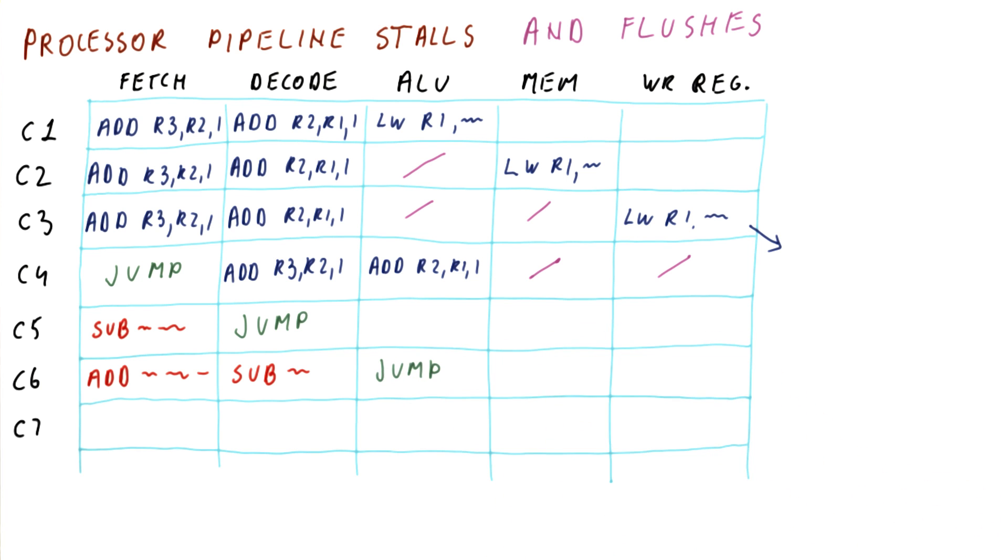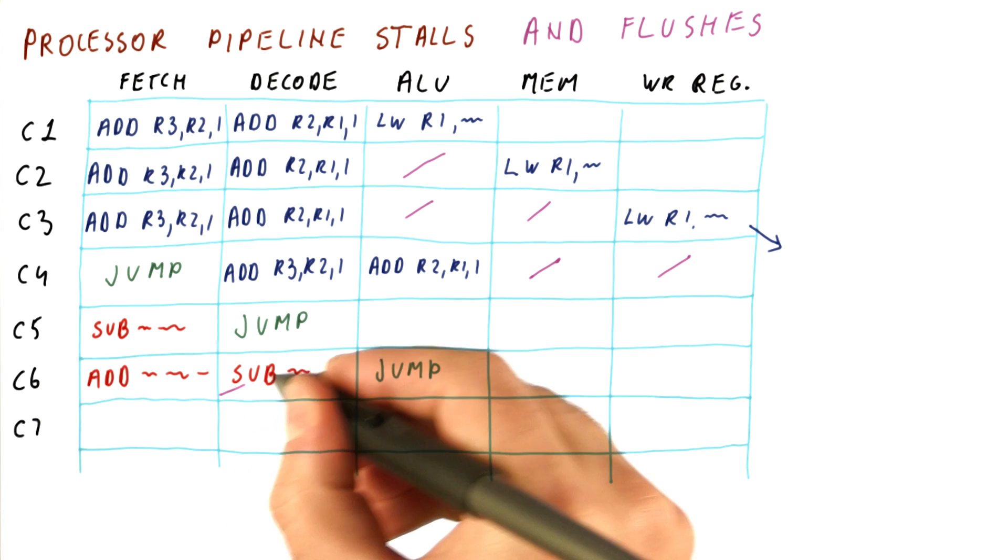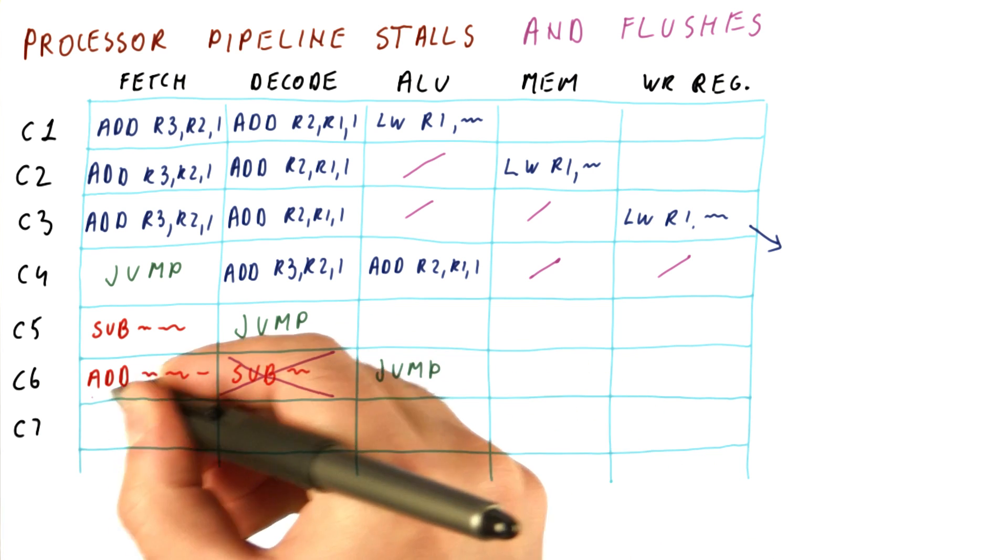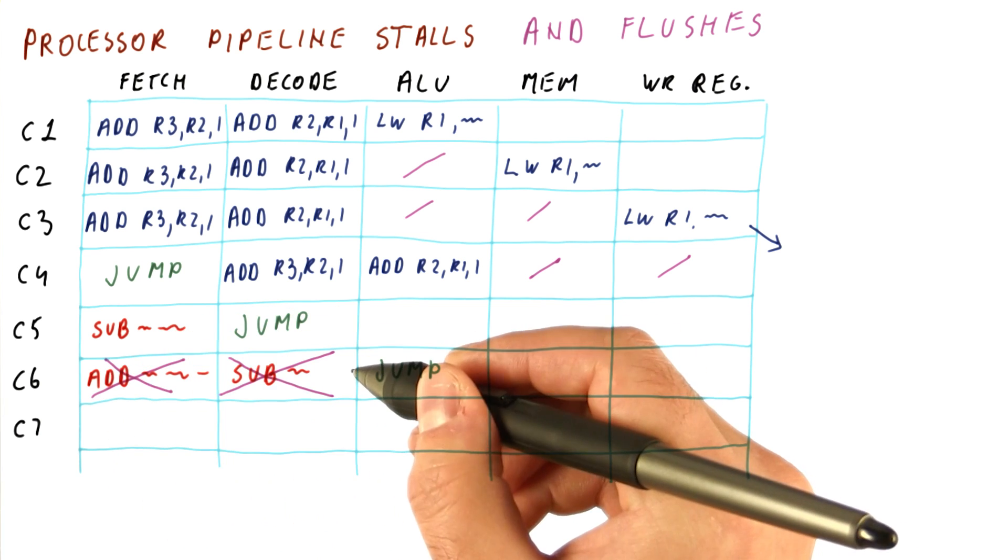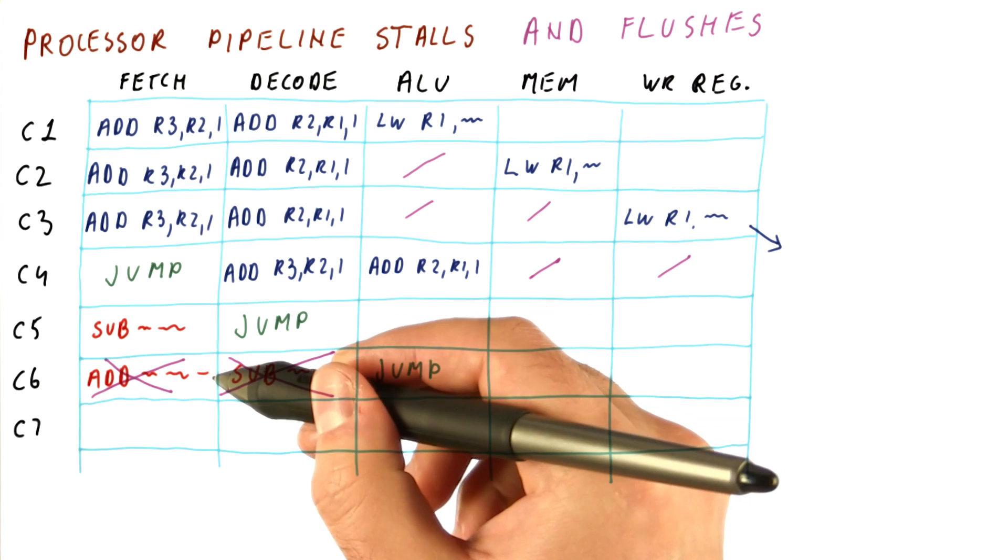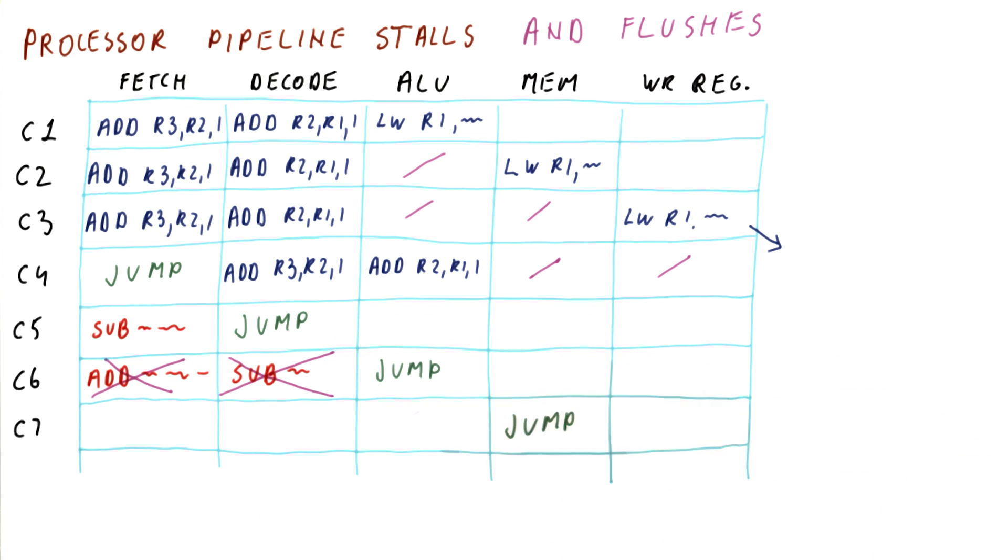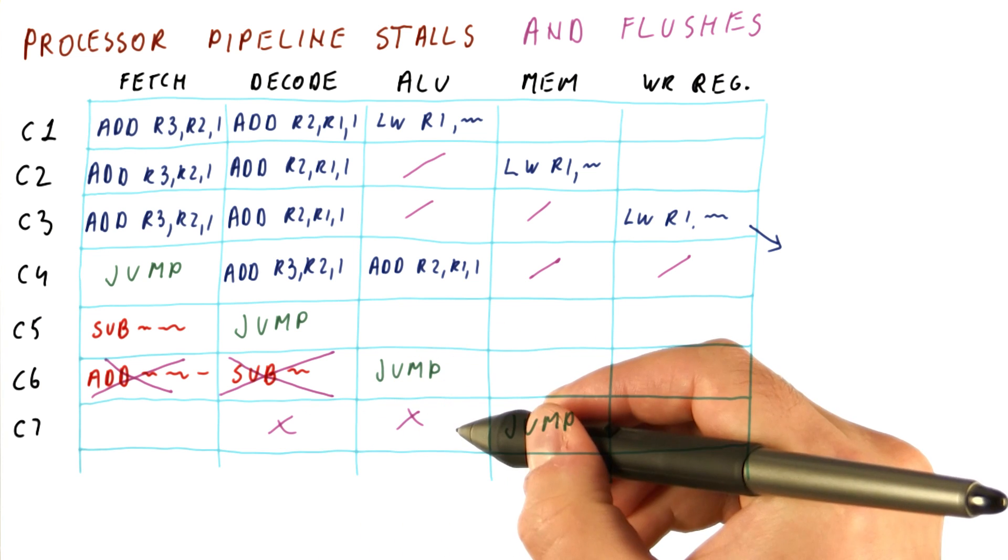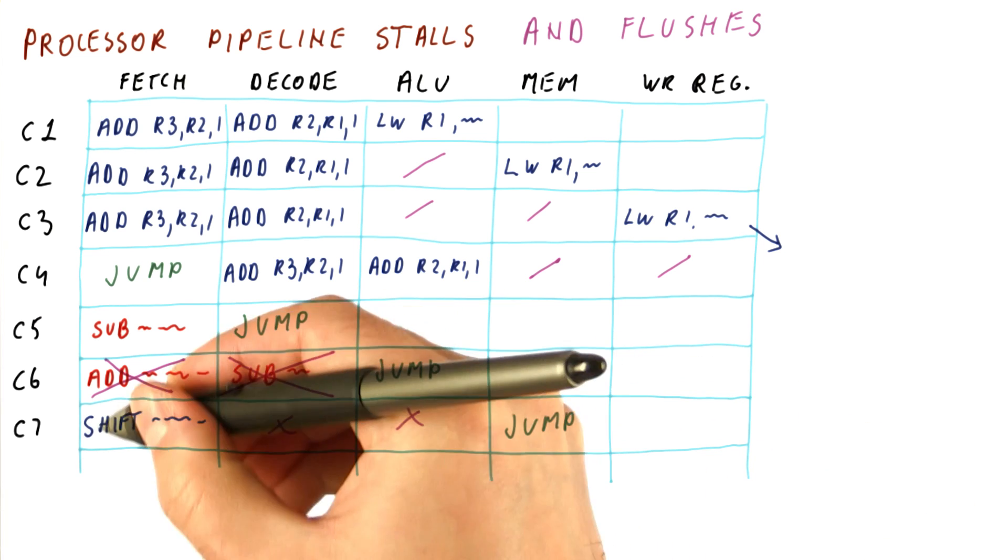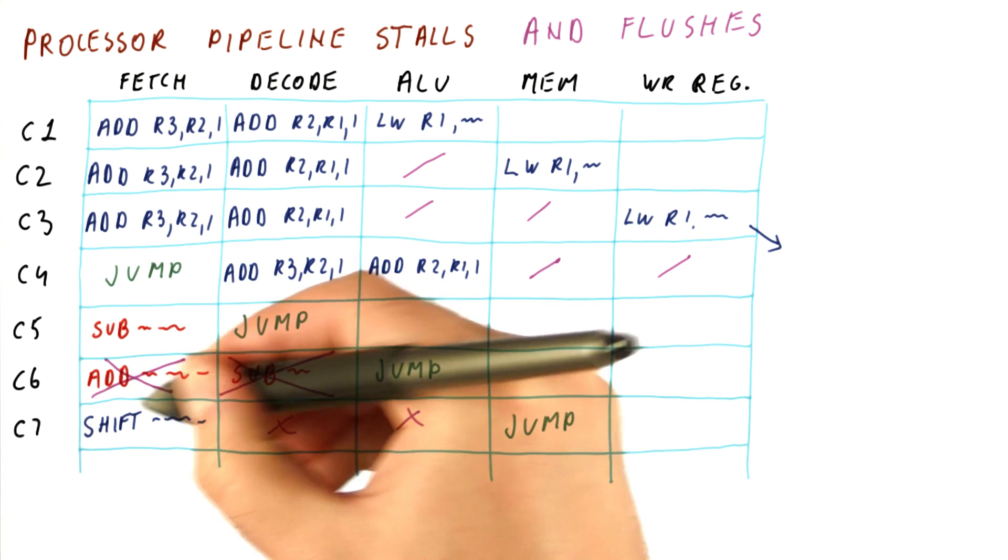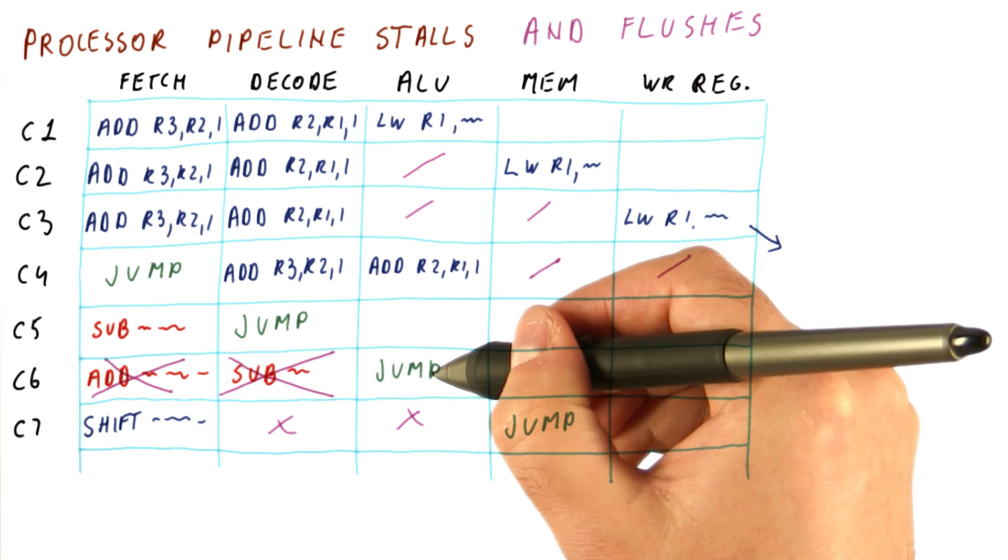So what happens now is called a pipeline flush. What we do is we convert these fetched instructions into pipeline bubbles. And then as the jump moves on, these two bubbles will also move on. And now we will fetch the correct instruction that should have been fetched right after the jump.